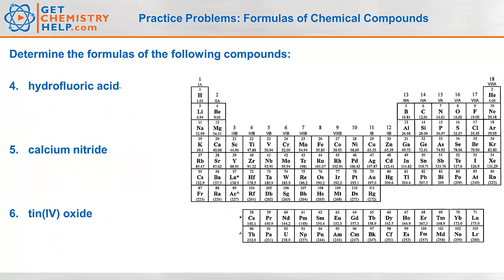Hydrofluoric acid — this is an acid, so I figure out the anion from the naming clues. 'Hydro' and '-ic' tells me the anion ended in '-ide,' so hydrofluoric came from fluoride. Fluoride means a non-metal by itself, so it came from fluorine. Fluorine is 1 away from the noble gases, so it's 1-negative. How many H-pluses do I need to balance F-negative? Just 1. So the formula is HF, and don't forget to write aqueous to show it's an acid: HF(aq).